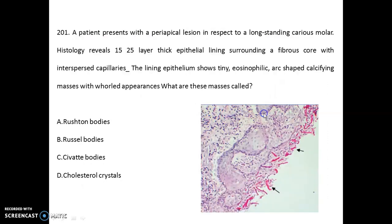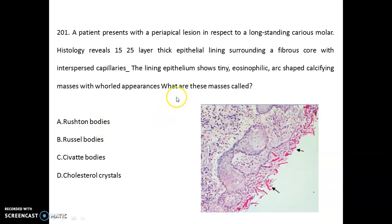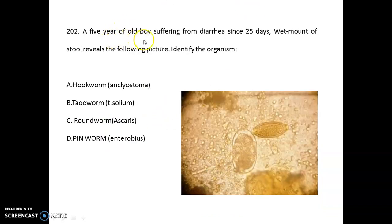This dental pathology image shows thickened epithelium surrounded by a fibrous core with interspersed capillaries. The lining epithelium shows arc-shaped calcifying masses with an old appearance. The case history reveals a periapical lesion in a long-standing carious molar. These masses are Rushton bodies.